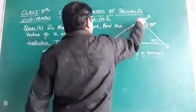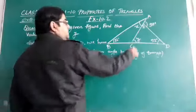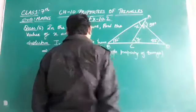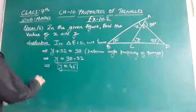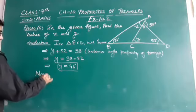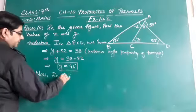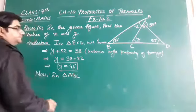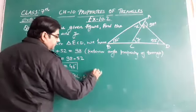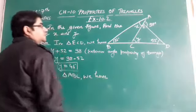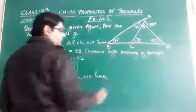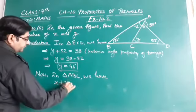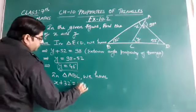Now in this triangle, triangle ABC, angle ACB is an exterior angle. We have the sum of x and 32. That is x plus 32 will be equal to y.